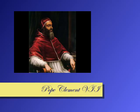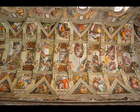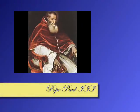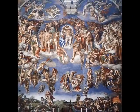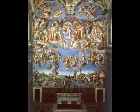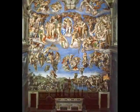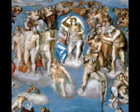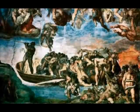Pope Clement VII loved Michelangelo's work on the ceiling so much that he wanted him to paint the altar wall of the Sistine Chapel. Pope Clement VII died, but Pope Paul III renewed the project and ordered Michelangelo to paint the fresco of the Last Judgment. Michelangelo used the whole wall to do this fresco, a massive surface measuring 44 feet 6 inches high by 39 feet 7 inches long. This project took him six years to complete. The painting revolves around Christ in the center — on the left, the chosen rise from their graves and ascend towards heaven, but on the right, the damned descend into hell.